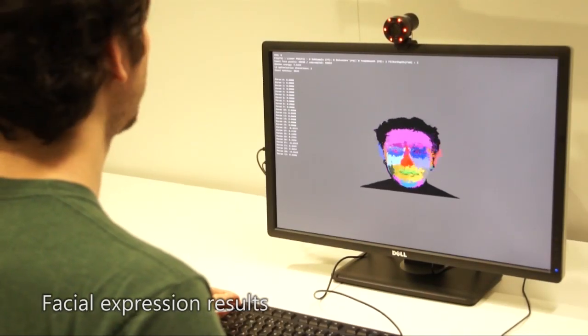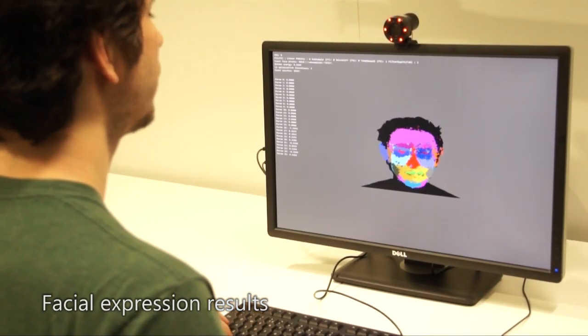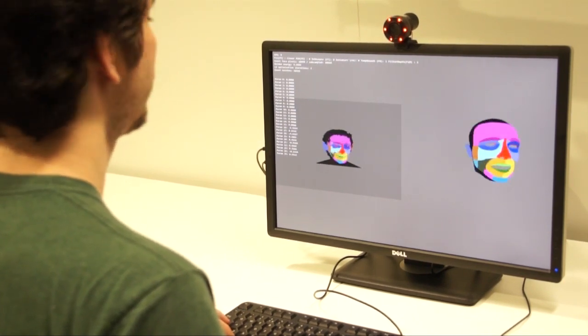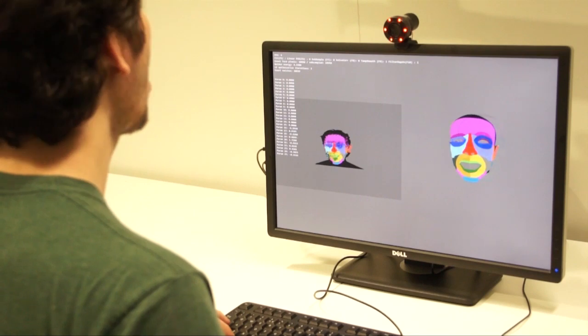Given the accuracy of our depth estimation algorithm, we can plug into existing components that work from depth maps. For example, here we can apply facial part classification and expression detection for controlling an avatar.